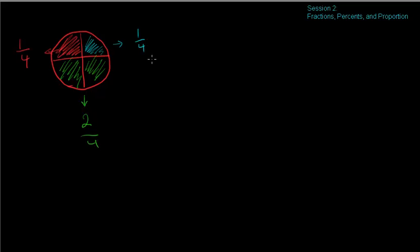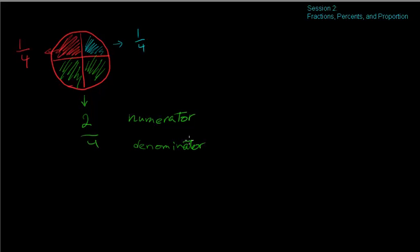The top number says how many slices you have — it's called the numerator. The numerator tells you how many of these parts we are dealing with. The bottom number says how many slices the pizza was cut into — that is called the denominator. The denominator says how many slices the whole is divided into.